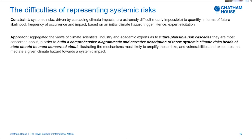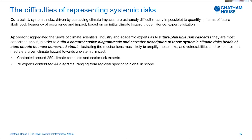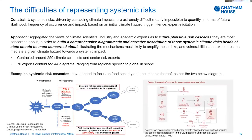The goal was to build a comprehensive diagrammatic narrative description of those systemic climate risks that heads of state should be most concerned about, illustrating the mechanisms most likely to amplify those risks and the vulnerabilities and exposures that mediate a given climate hazard towards a systemic impact. We found that the vulnerabilities and exposures were very difficult to represent within these cascading diagrams. We contacted around 250 climate scientists and sector risk experts, with around 70 experts contributing 44 diagrams ranging from regionally specific to global in scope. Prior to our report, the literature really didn't contain many holistic and easy-to-understand risk cascade diagrams.